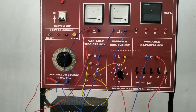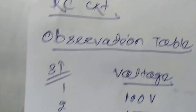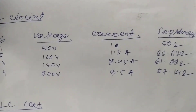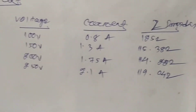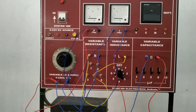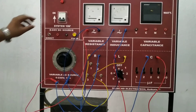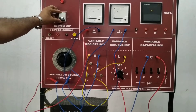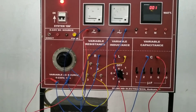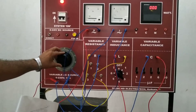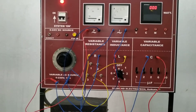We record the observation in the observation table. The RC circuit observation table shows voltage 150V and current 0.5 ampere, and impedance is also calculated. In this observation table we also find out impedance by using voltage and current with the formula Z = V / I.